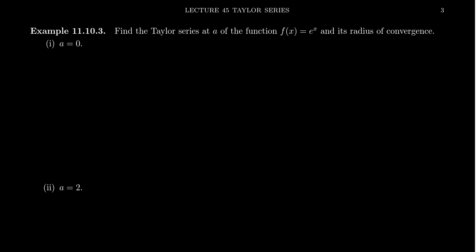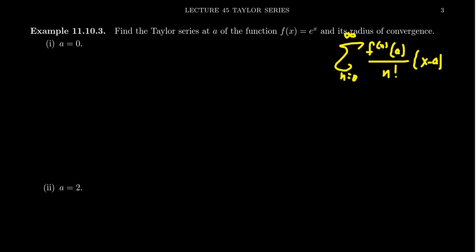As we saw previously, when we have our Taylor series, the coefficients start from n equals zero and go towards infinity. The coefficient of the Taylor series is the nth derivative of the function evaluated at the center a, divided by n factorial, multiplied by x minus a to the n. This gives us Taylor's formula for a Taylor series.